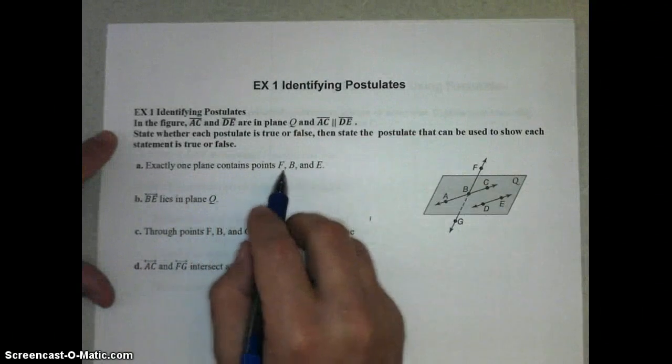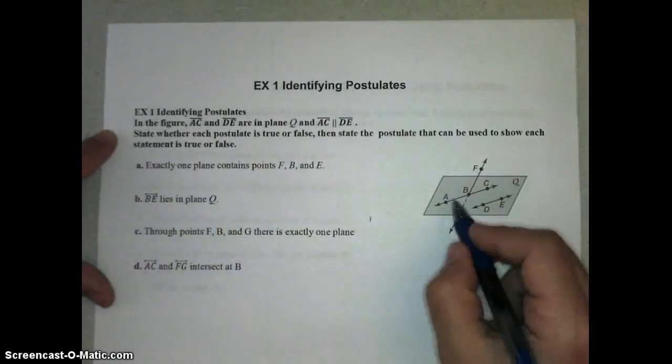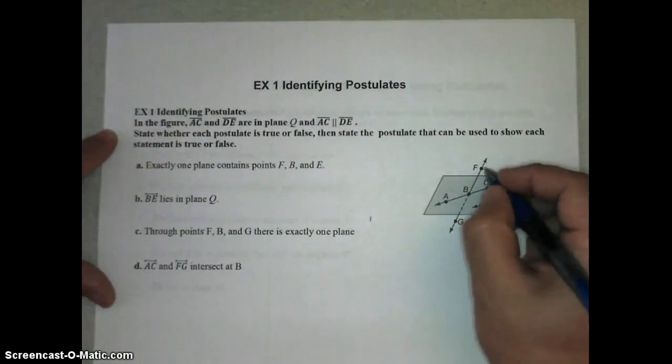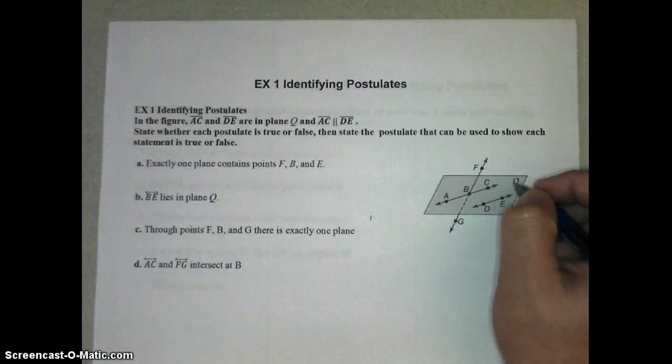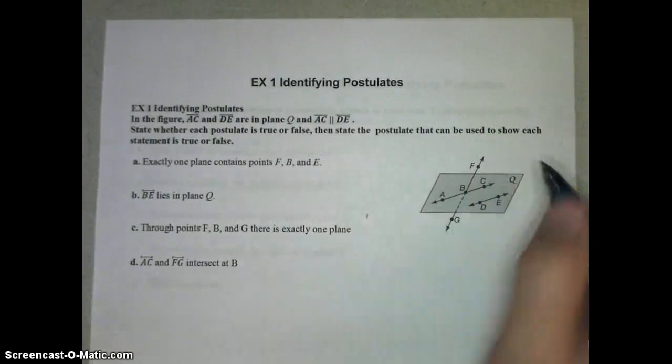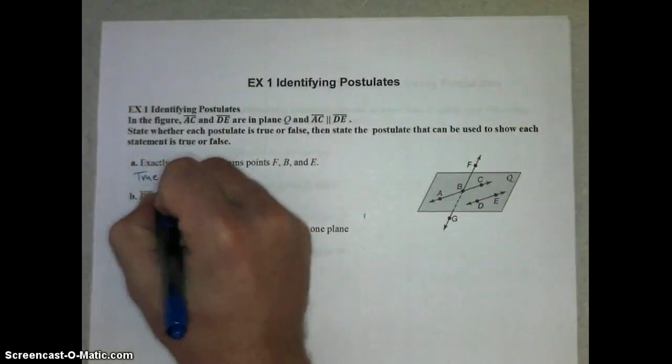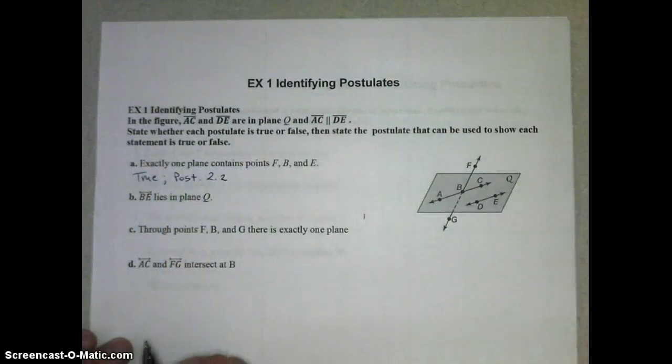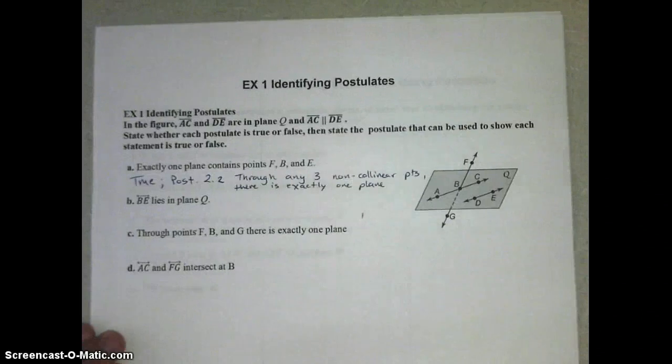So let's take a look at number 1A. Exactly one plane contains points F and B and E. Well, we have F, B, and E. Those are non-collinear. Even though F is above that plane, these are three non-collinear points. And we have a postulate that states through any three non-collinear points, there's exactly one plane. Also, we have the one that says a plane contains at least three non-collinear points. But that first postulate, 2.2, is what tells us this. So this is true because of postulate 2.2, which states through any three non-collinear points, there's exactly one plane.